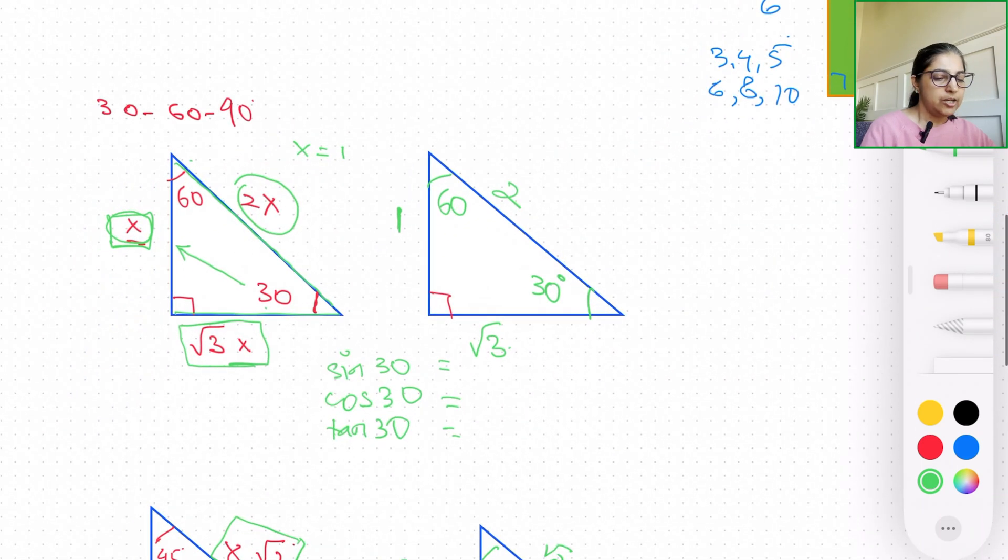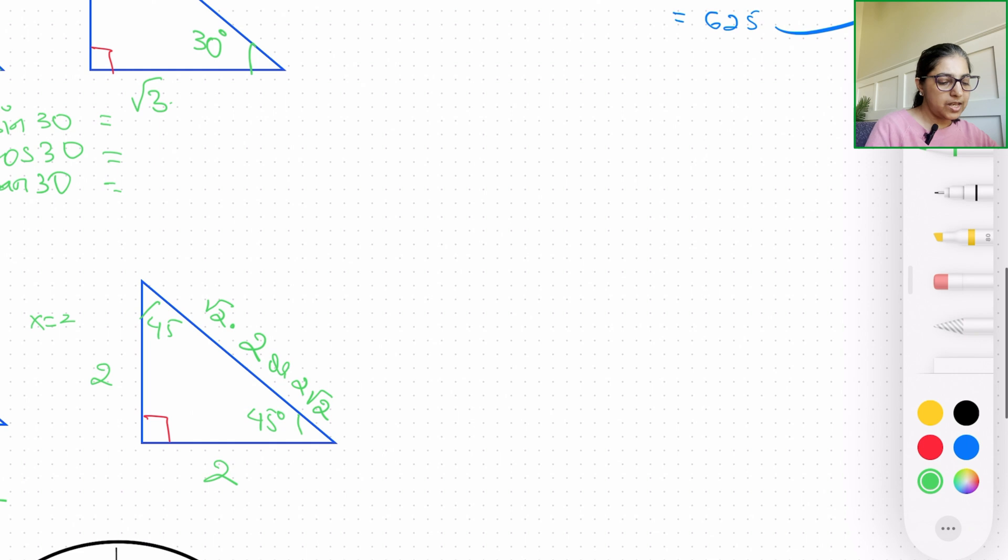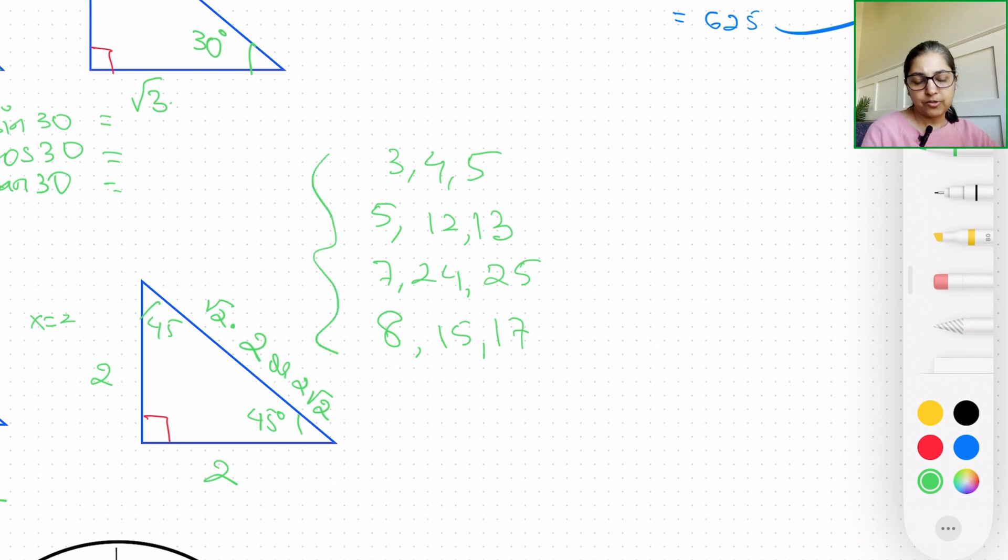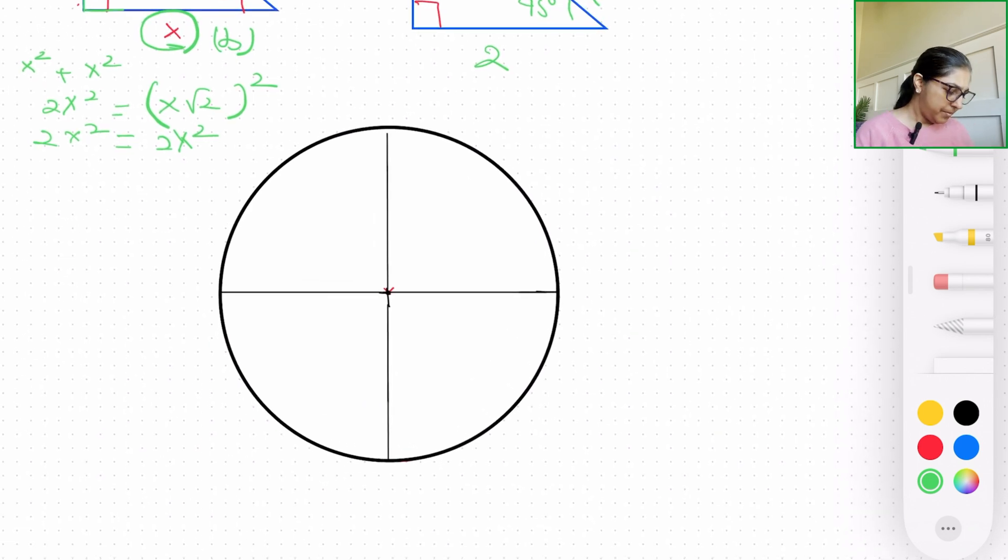Now there are many triplets, Pythagorean triplets, that are utilized outside of 3-4-5. There are also triplets like common triplets of 5-12-13, where the Pythagorean theorem applies. There is 7-24-25, there is another one as 8-15-17, and the list goes on and on. But these are some other combinations of the Pythagorean triplets that we can find usage in.